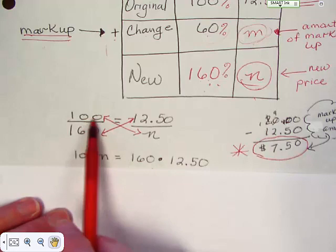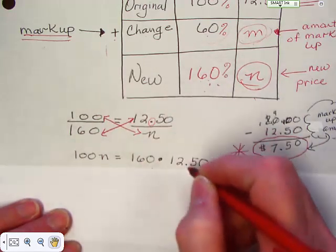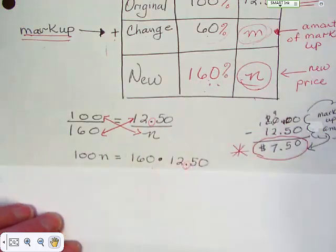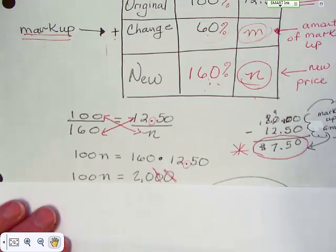Take one hundred times n equals one sixty times twelve fifty. Watch that decimal. Okay. Don't lose that baby, because if you forget about it then your answer is going to be radically wrong.